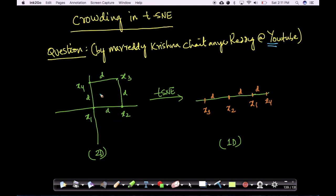imagine we are taking a 2D data set of four points x1, x2, x3, x4, which are on a square where the distances between x1, x4 is d, x3, x4 is d, x3, x2 is d, similarly x1, x2 is d.